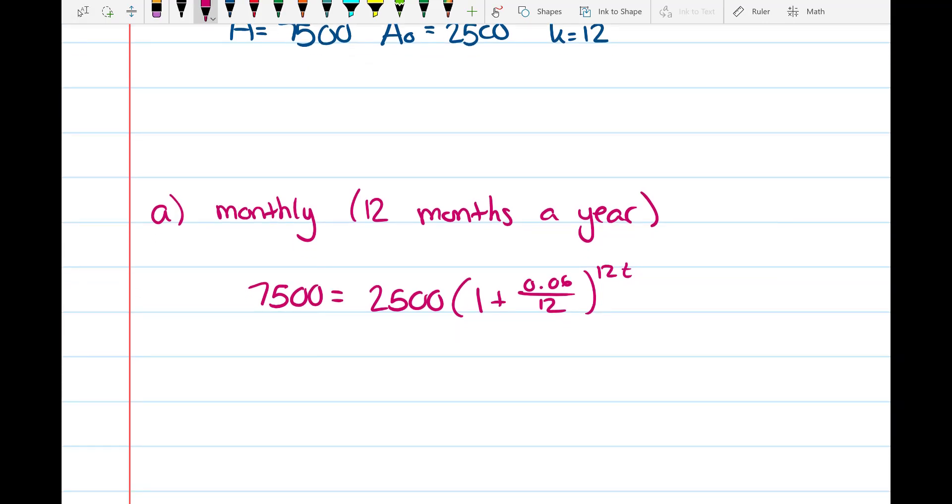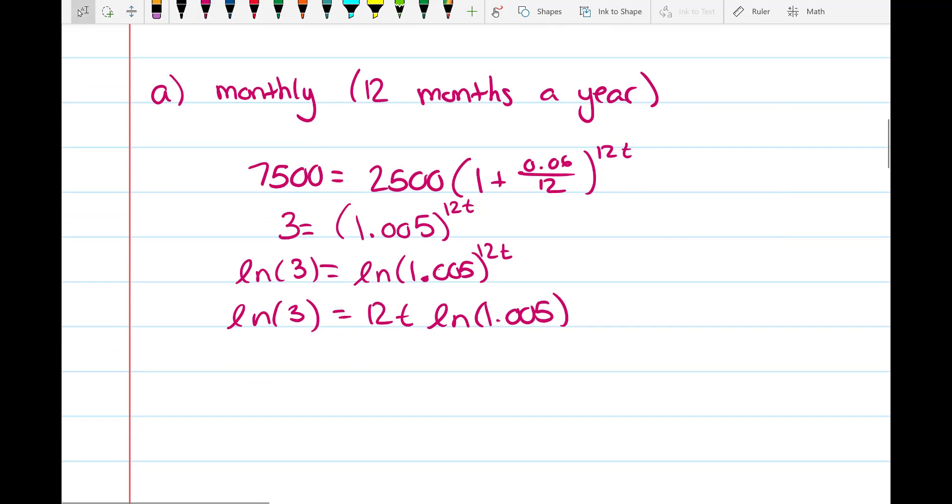And we get 3 = 1.005^(12t). So now you take the ln of both sides: ln(3) = ln(1.005^(12t)). And because of ln properties, we can move the exponent to the front: ln(3) = 12t × ln(1.005).